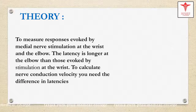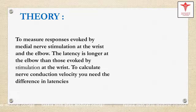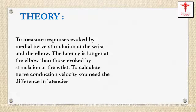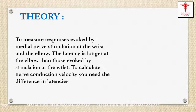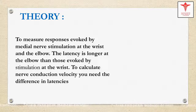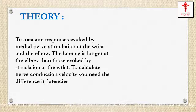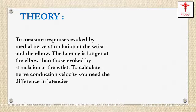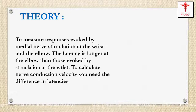Two major responses are evoked by the medial nerve stimulation at the wrist and at the elbow. The latency is longer at the elbow than those evoked by stimulation at the wrist. To calculate the nerve conduction velocity, you need the difference in latencies.